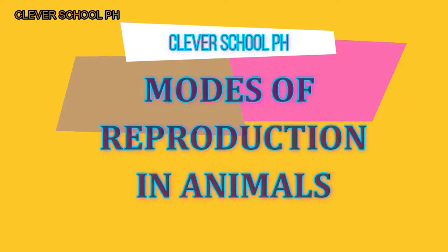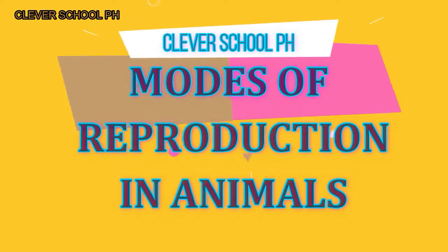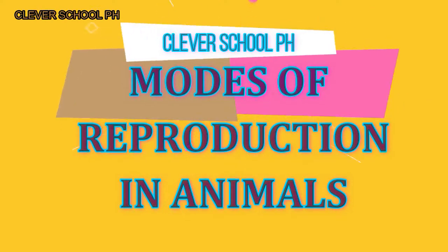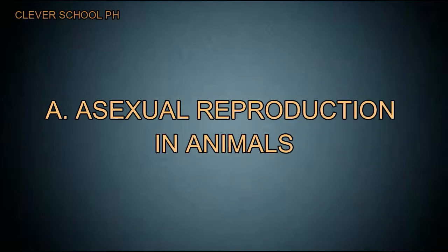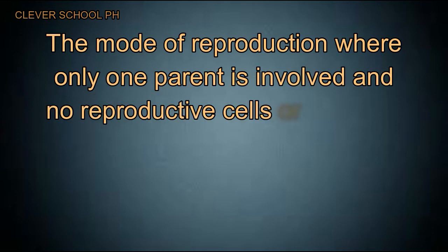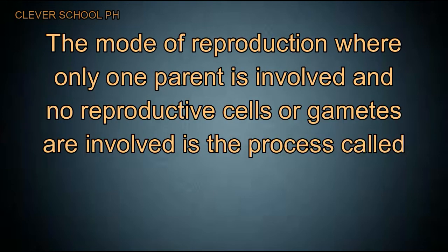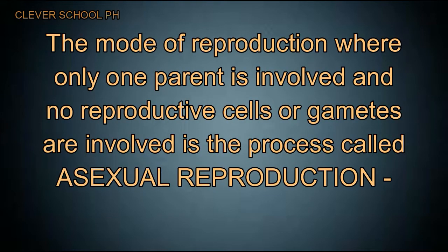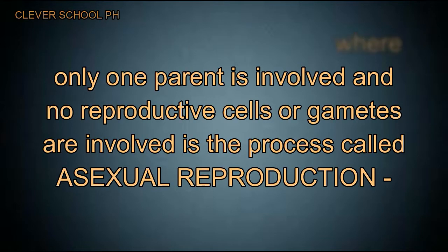Modes of reproduction in animals. Asexual reproduction in animals is the mode of reproduction where only one parent is involved and no reproductive cells or gametes are involved. This process is called asexual reproduction.